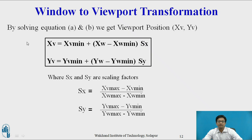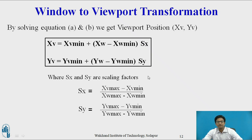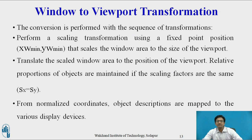By solving equations 1 and 2, we get the viewport positions x_v and y_v as: x_v = x_v_min + (x_w − x_w_min) × s_x, and y_v = y_v_min + (y_w − y_w_min) × s_y. Here s_x and s_y are the scaling factors, where s_x = (x_v_max − x_v_min) / (x_w_max − x_w_min), and s_y = (y_v_max − y_v_min) / (y_w_max − y_w_min). Scaling factors are used to convert a sequence of transformations.